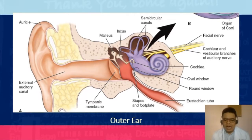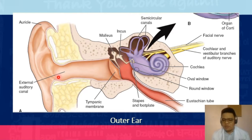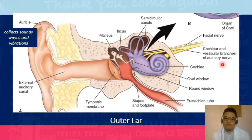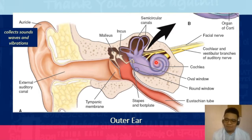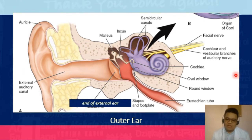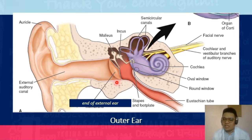The outer ear starts from your auricle going towards your tympanic membrane, where your external auditory canal (EAC) is found — about two to three centimeters long. The auricle collects sound waves and vibrations, and its structure magnifies sound as it travels toward the middle and inner ear. It also captures nearby sound waves. The tympanic membrane is the demarcation line between the outer ear and the middle ear.